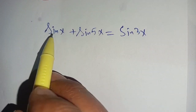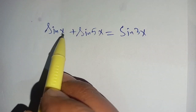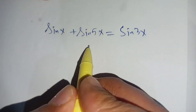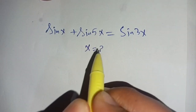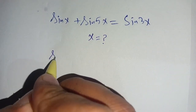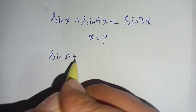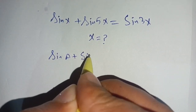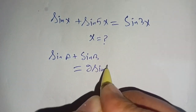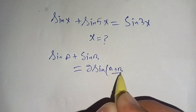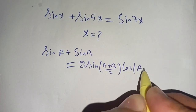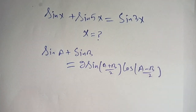Our next problem is a trigonometric problem: sin(x) + sin(5x) = sin(3x), and we have to find the value of x which satisfies this equation. Let us solve this. We know that sin(a) + sin(b) = 2·sin((a+b)/2)·cos((a−b)/2).